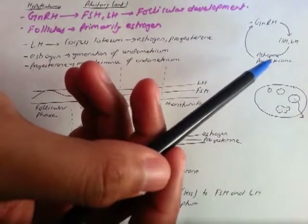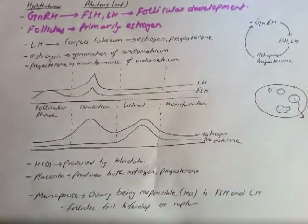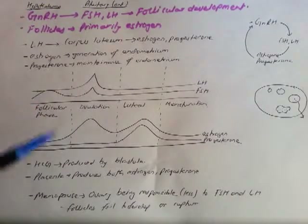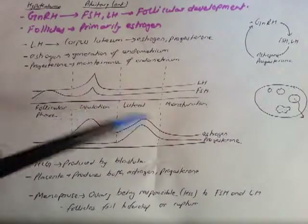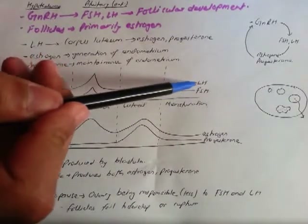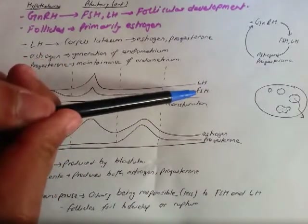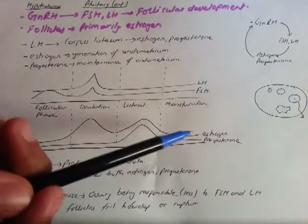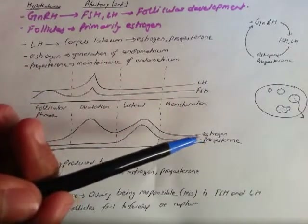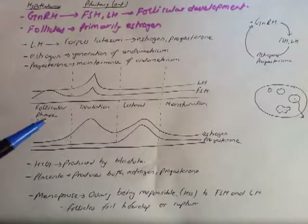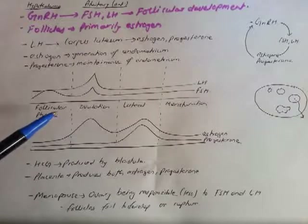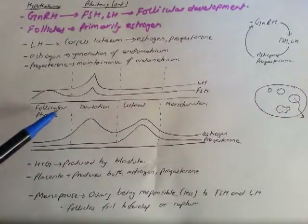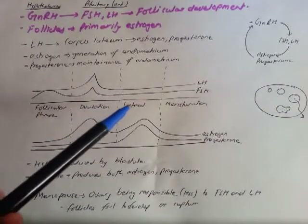These two graphs show the change in hormones during the menstruation cycle. The upper one shows the change in LH and FSH, and the lower one shows the change in estrogen and progesterone throughout the cycle. The whole menstruation cycle is divided into four different phases: follicular, ovulation, luteal, and menstruation.